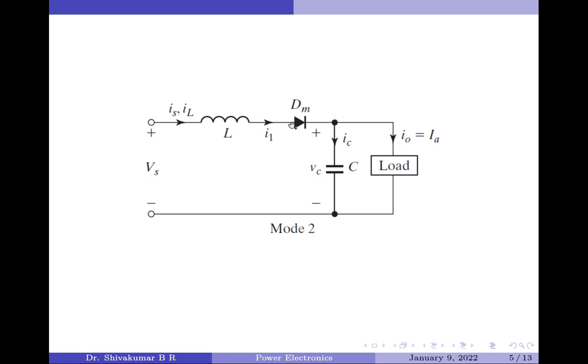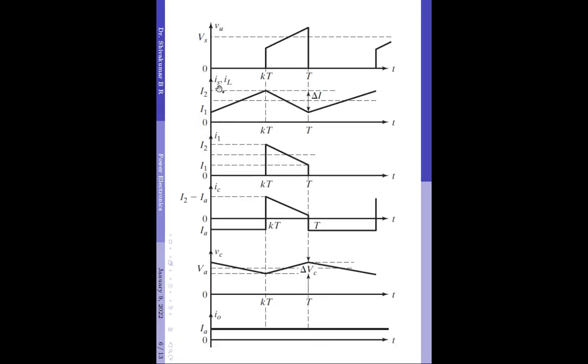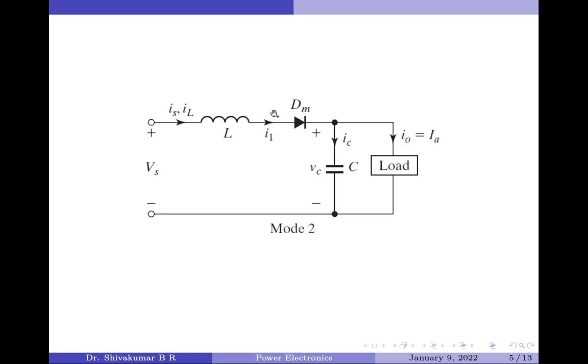Let us now move on to mode 2. The circuit for mode 2 is shown here. Mode 2 begins when the transistor is turned off at time t1. In the previous mode, the inductor stored energy which is now released to forward bias the diode DM. The load and the supply are now connected and the inductor current equals the supply current, as shown in the waveform here. As the inductor is discharging, the inductor current starts to decrease. The same current flows through the anode of diode DM as well, so the same waveform appears across the diode anode for mode 2.